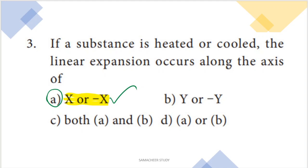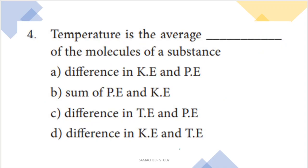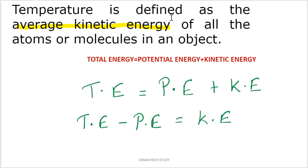Next question: temperature is the average dash of the molecules of the substance. From the textbook, temperature is the average kinetic energy of all the atoms or molecules in an object.